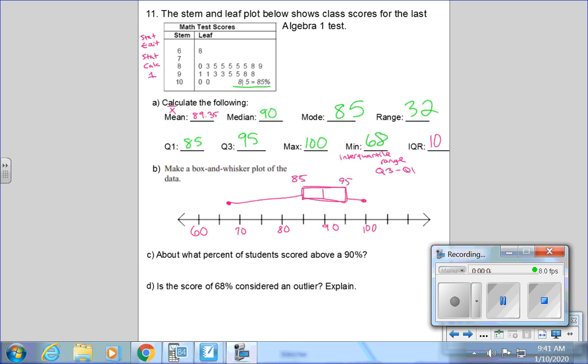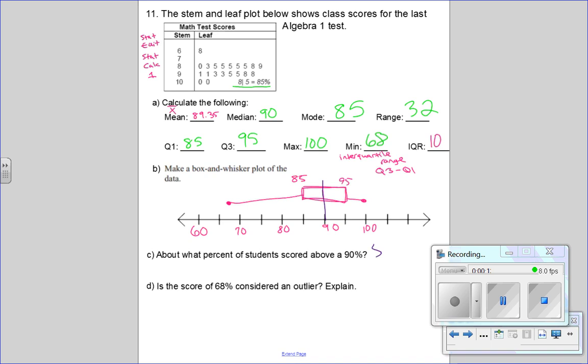About what percent of the students scored above a 90? Well, 90 is our median, so 50% of students have scored above a 90.